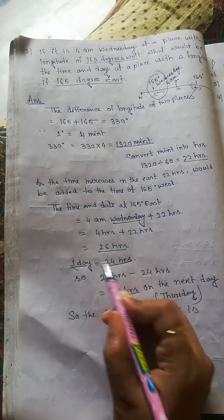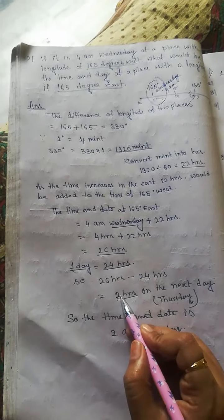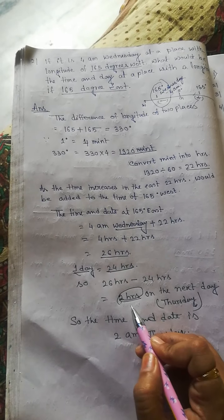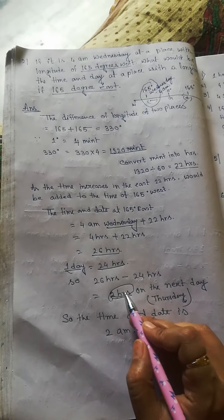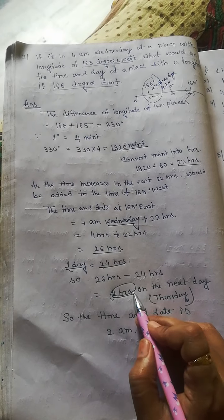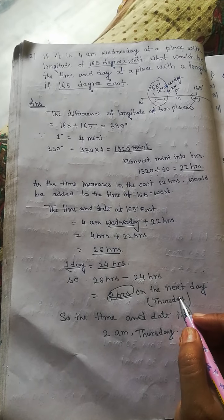So you have this 2 extra hours. What you do with this 2 extra hours? You have to add the extra hours on the next day. That means Thursday.